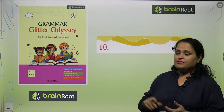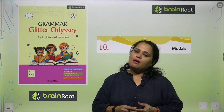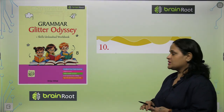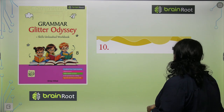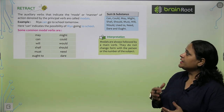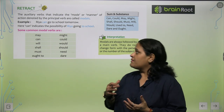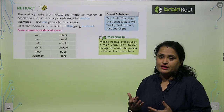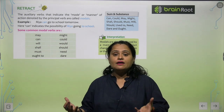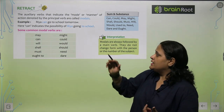Welcome to the next chapter from your book Grammar Glitter Odyssey by Brain Root from Amit Publishing House. Chapter number 10 is Modals. So kids, are you aware what modals are? I'll tell you — the auxiliary verbs that indicate the mode. Auxiliary verbs hoti hain jo kisi mode ya manner ko batati hain action ke. Jo wo action kiya ja raha hai, wo kis manner mein kiya ja raha hai, kis mode mein — those are called Modals.